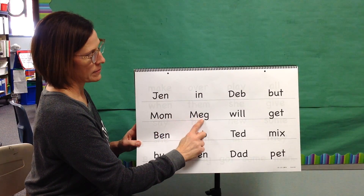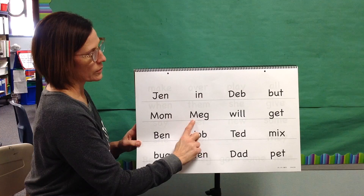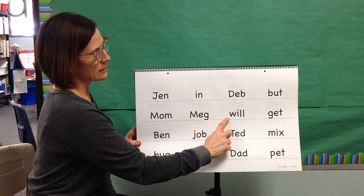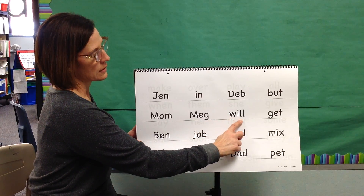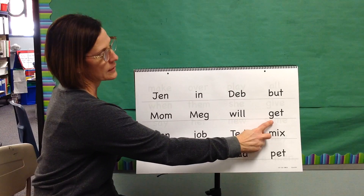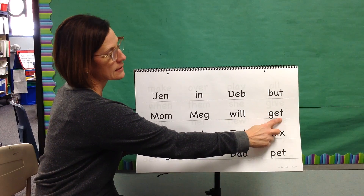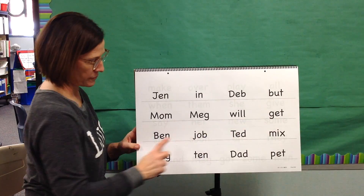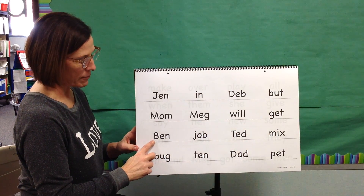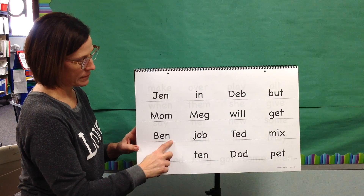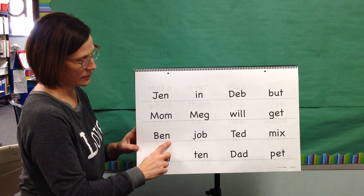Blend: Egg. Word: Meg. Blend: Will. Word: Will. Blend: Get. Word: Get. Blend: Ben. Word: Ben.